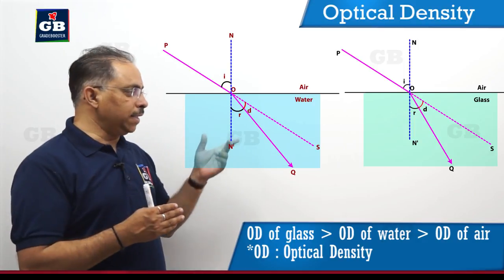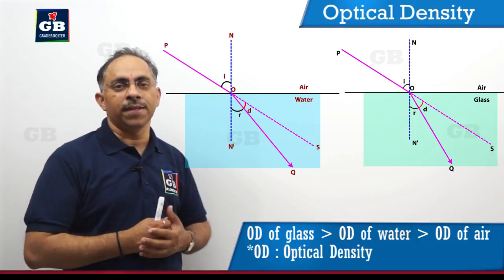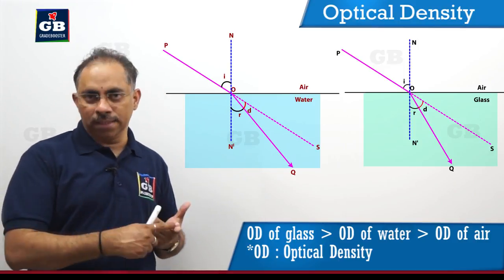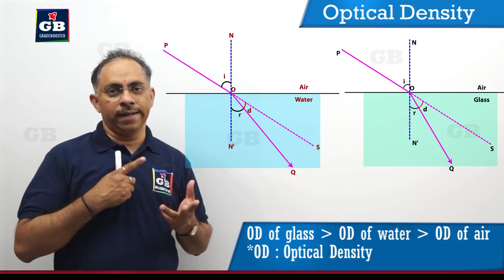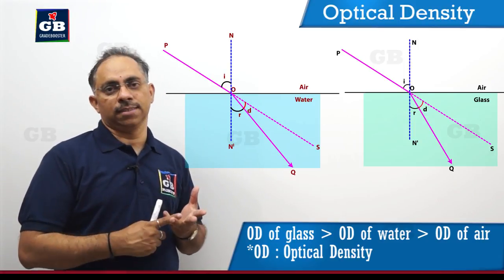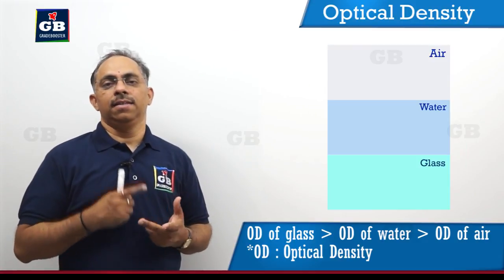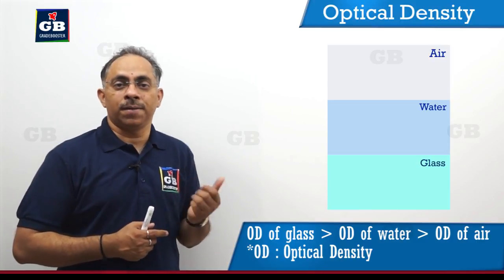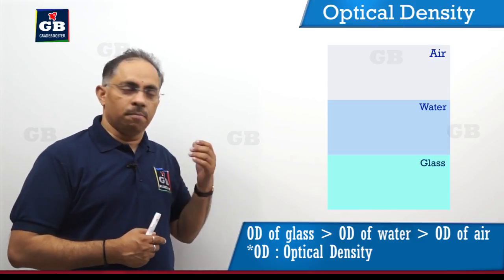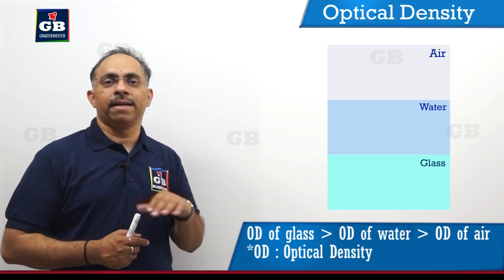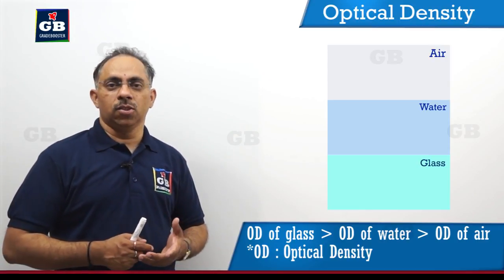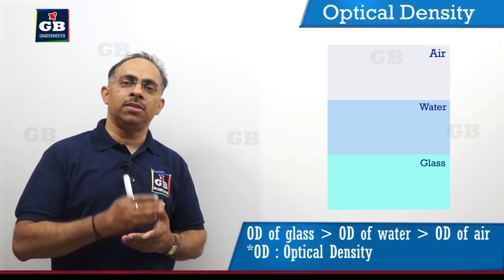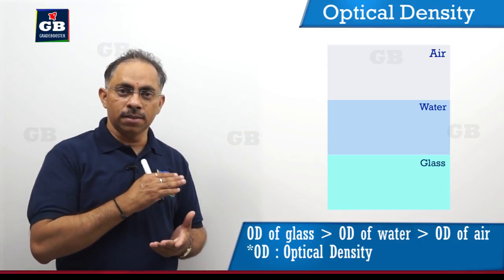If I consider these two examples, like the air-water interface and air-glass interface, there are a total of three media we are considering: air, water, and glass. Out of these three, air is optically rarer. Next, the optically denser medium is water. Compared to water, glass is a little bit more optically denser. So the optical density of glass is greater than that of water, and that of water is greater than that of air.